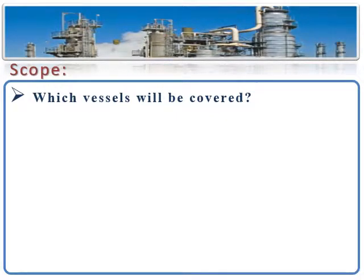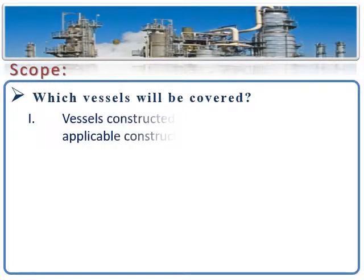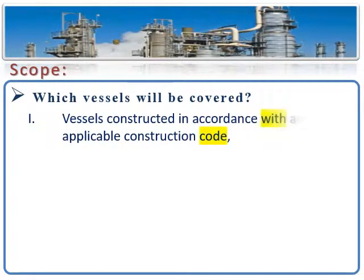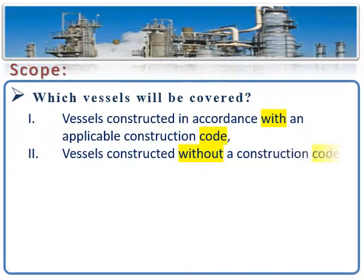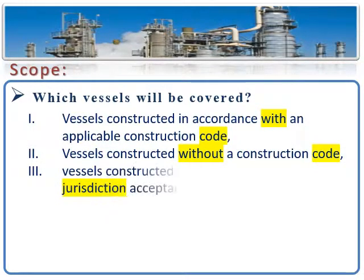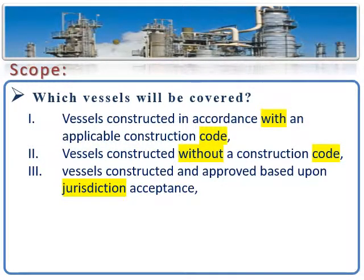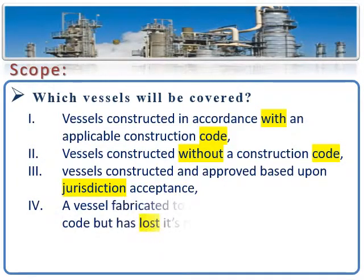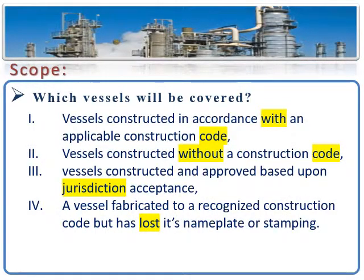Obviously, this inspection code applies to all refining and chemical process vessels that have been placed in service, as well as pressure relieving devices protecting these vessels. The vessels covered include those constructed in accordance with an applicable construction code, or without a construction code, or approved based upon jurisdiction acceptance, or vessels fabricated to a recognized construction code but that have lost their nameplate or stamping.